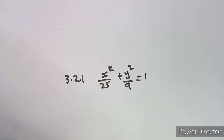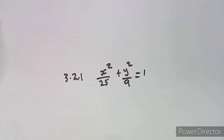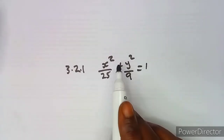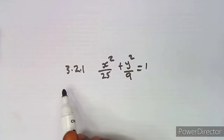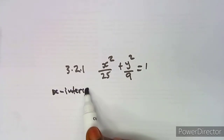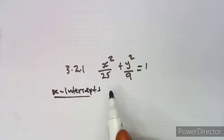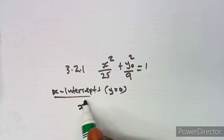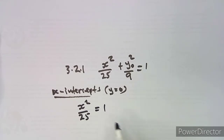To sketch this graph, we need the x-intercepts and the y-intercepts. Since we have squares on both terms, we will have both x-intercepts and y-intercepts. For the x-intercepts, we use the condition where y is equal to zero. Substituting y = 0 gives us x squared over 25 equal to 1.